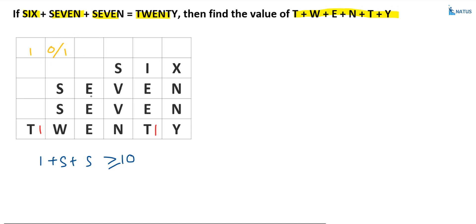To determine whether carry-over exists from this column to this column, the sum of E plus E is either 0, 2, 4, or 6. If E equals 0, carry does not exist. But if any carry-over comes from this place, E is not equal to 0. So consider carry-over from this column equals 1. Then 1 plus S plus S must be greater than or equal to 10, meaning S plus S is greater than or equal to 9.